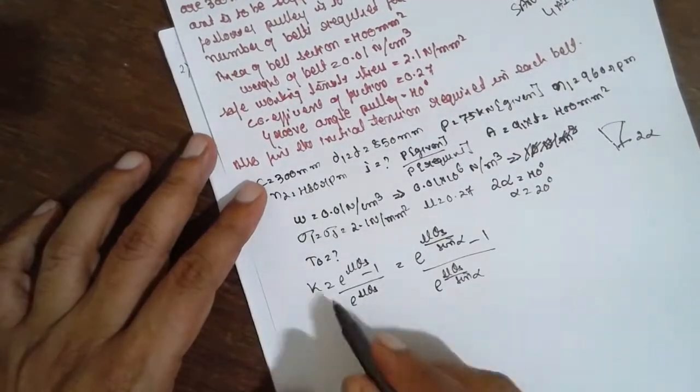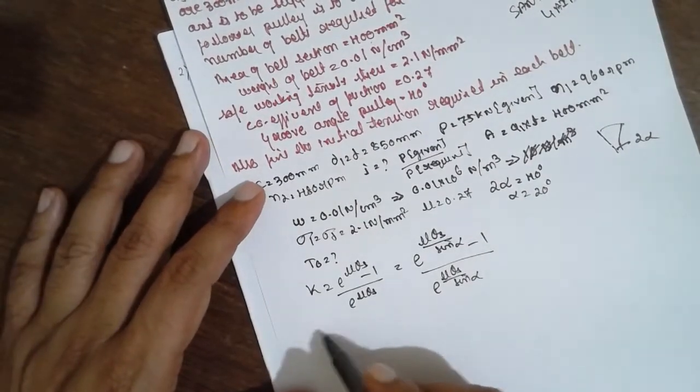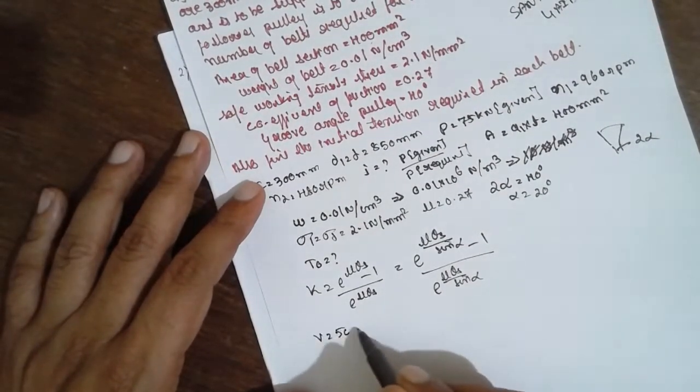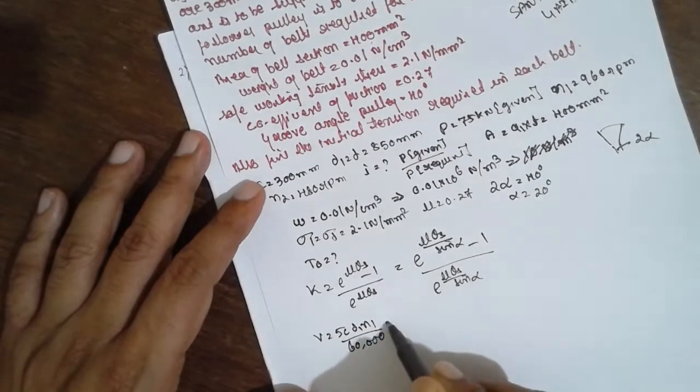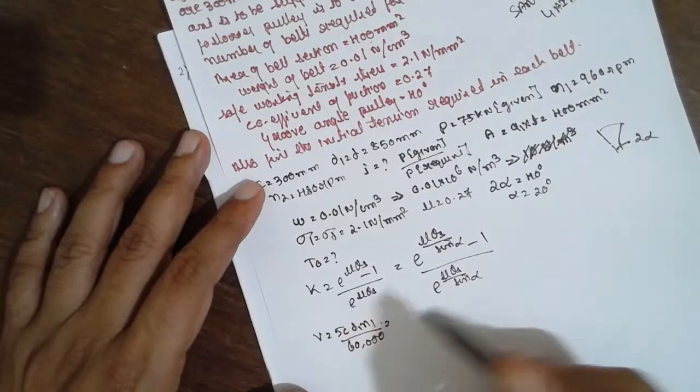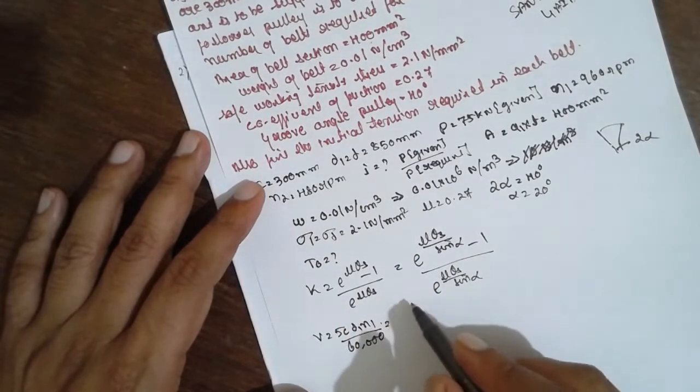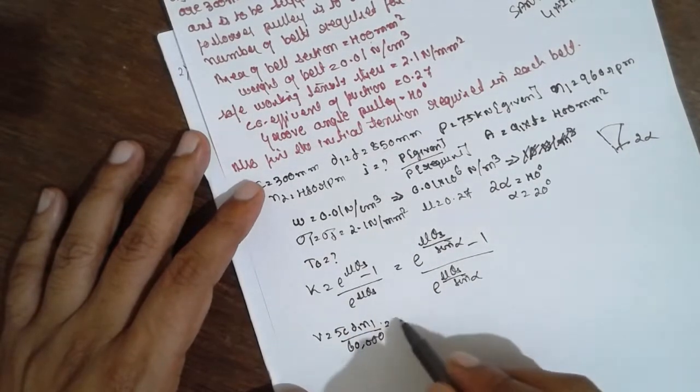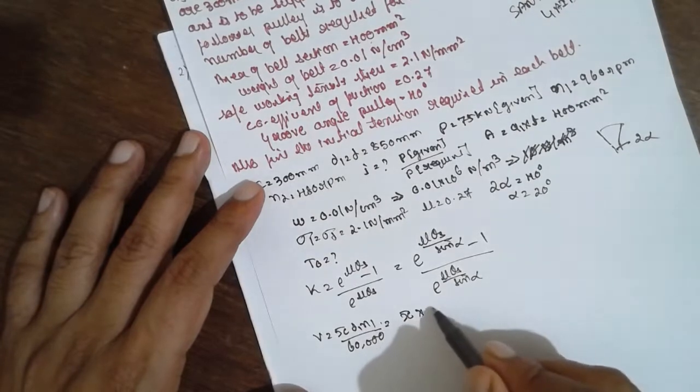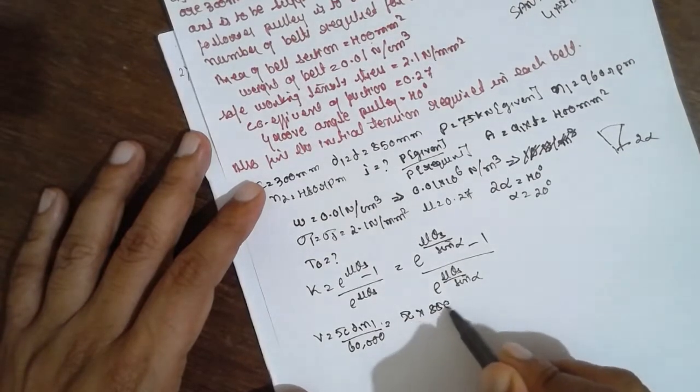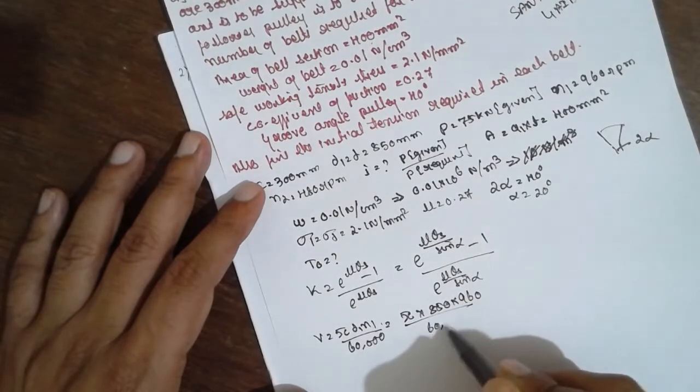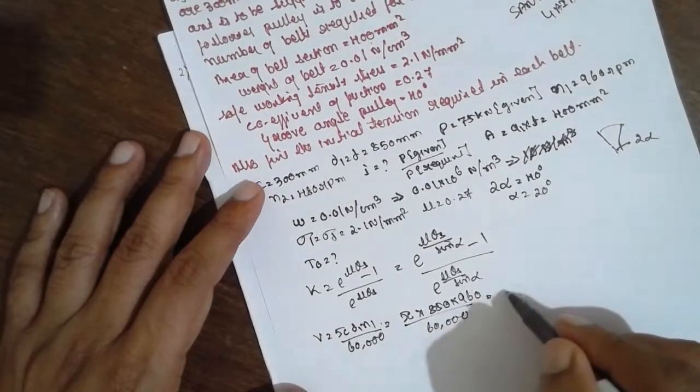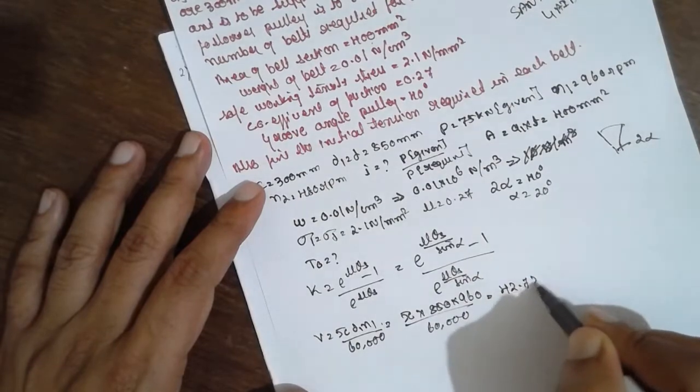Now first I will find the velocity here. Velocity v is equal to pi*d1*N1 divided by 60,000. Don't consider the thickness here, it is a V-belt drive. If it is a flat, you have to consider thickness. Pi into 850 into 960 divided by 60,000, you will get 42.72 meters per second.